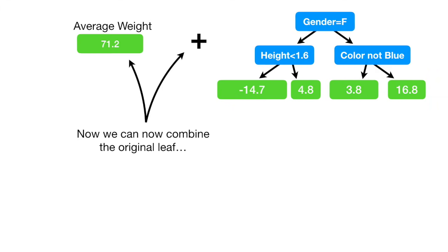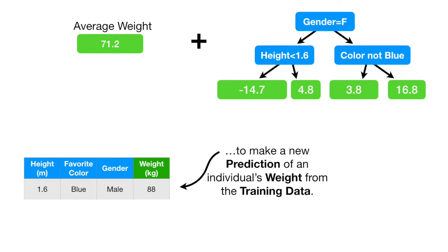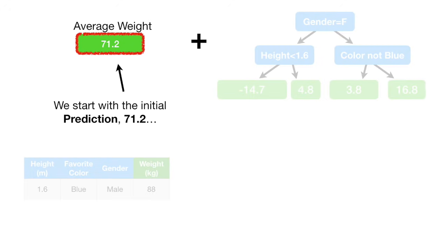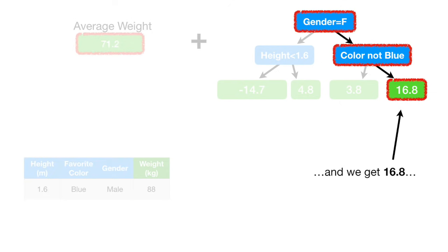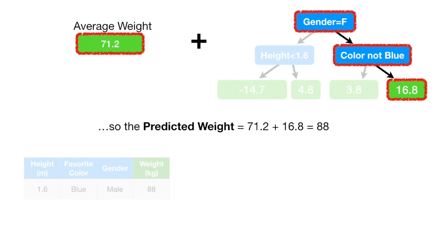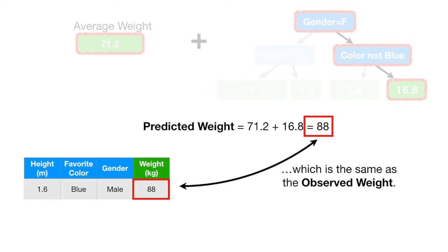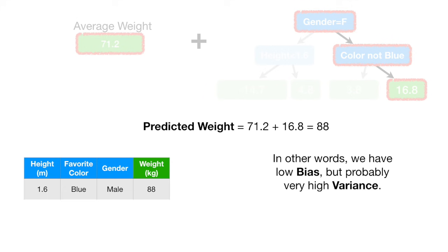Now we can combine the original leaf with the new tree to make a new prediction of an individual's weight from the training data. We start with the initial prediction, 71.2, then run the data down the tree and get 16.8. So the predicted weight equals 71.2 plus 16.8, which equals 88 — the same as the observed weight. Is this awesome? No. The model fits the training data too well. In other words, we have low bias, but probably very high variance.